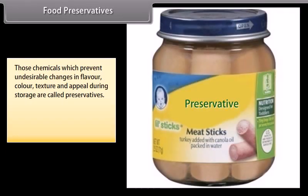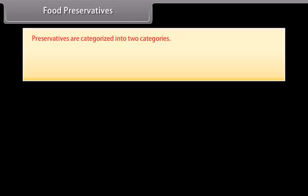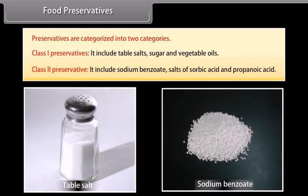Food preservatives: those chemicals which prevent undesirable changes in flavor, color, texture and appeal during storage are called preservatives. They delay these changes and prevent spoilage of food due to microbial growth. Preservatives are categorized into two categories: Class 1 preservatives, which include table salt, sugar and vegetable oils; and Class 2 preservatives, which include sodium benzoate, salts of sorbic acid and propanoic acid.